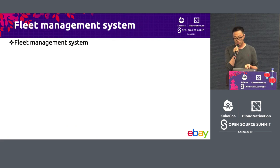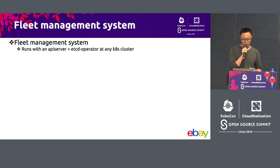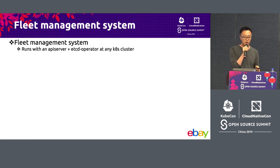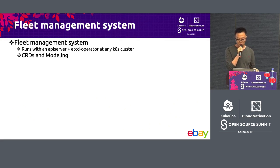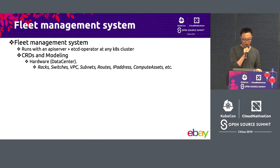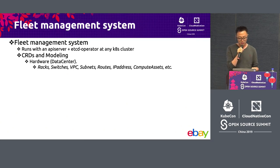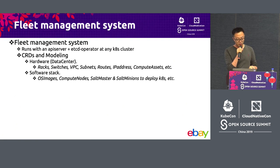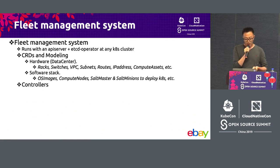Same as many other Kubernetes services, our system runs with API server and etcd cluster. In eBay we automated this process so that you can spin up a few pods and create an API server and etcd with an etcd operator. You can run them in a single cluster or run multiple clusters as an HA setup. Once you have the API set up, we create a lot of CRDs — which is the fun part, which is the modeling. We model almost everything: from hardware — our entire data center from racks to switches to VPC, subnets, and eventually compute assets where we can provision hosts from. We also touch the software stack, starting from the operating system, modeling compute nodes, and building Kubernetes with Salt. So it pretty much covers from infrastructure to application and from hardware to software.